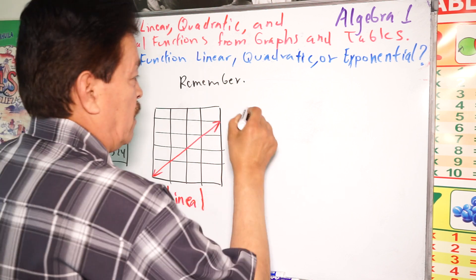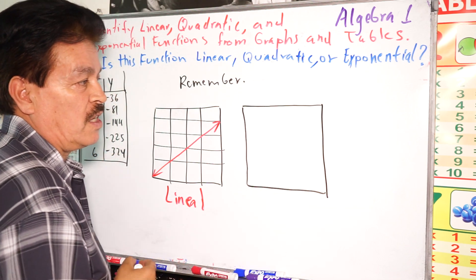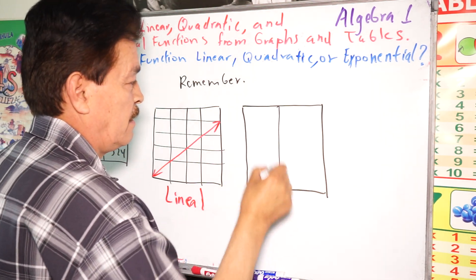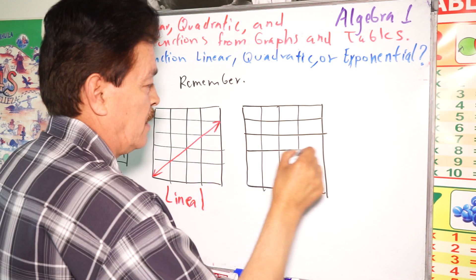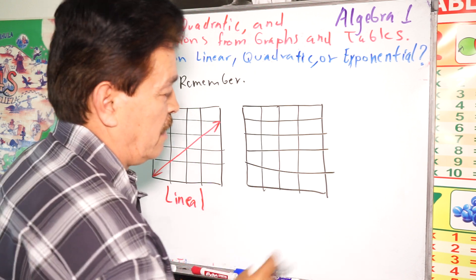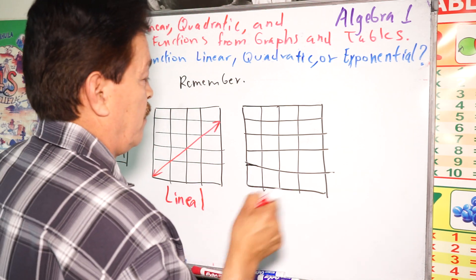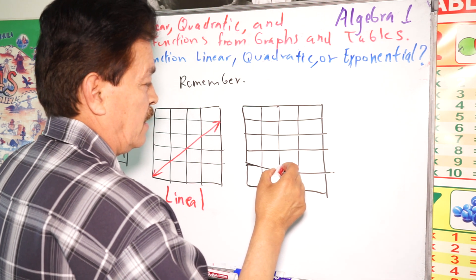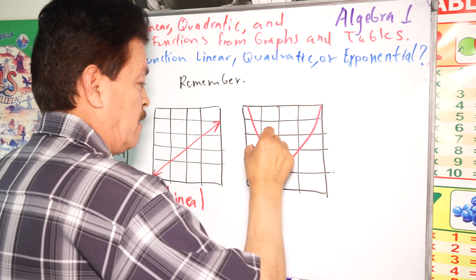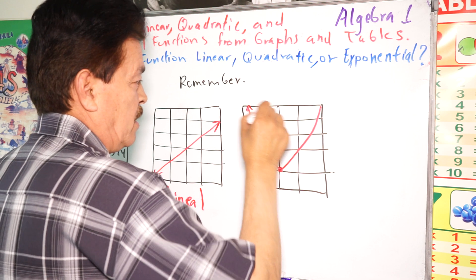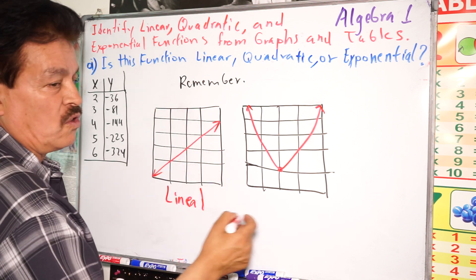We have another one here. You see a graph like this — something like that. The graph is running like this. You see something like this — a curve. So then the function, when you see the graph like that, the function is quadratic.